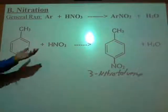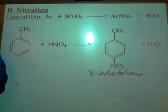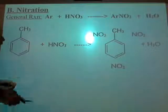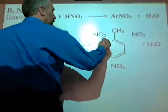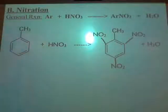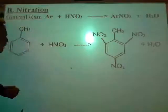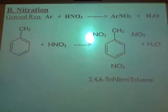That's all you would have to write for the test. But in industry, this is a very common reaction — especially in the war industry — because you can actually do this three times. You can put NO2 groups at positions 2, 4, and 6. If you do that, you would have 2,4,6-trinitrotoluene — I purposely capitalized certain letters of that — TNT!